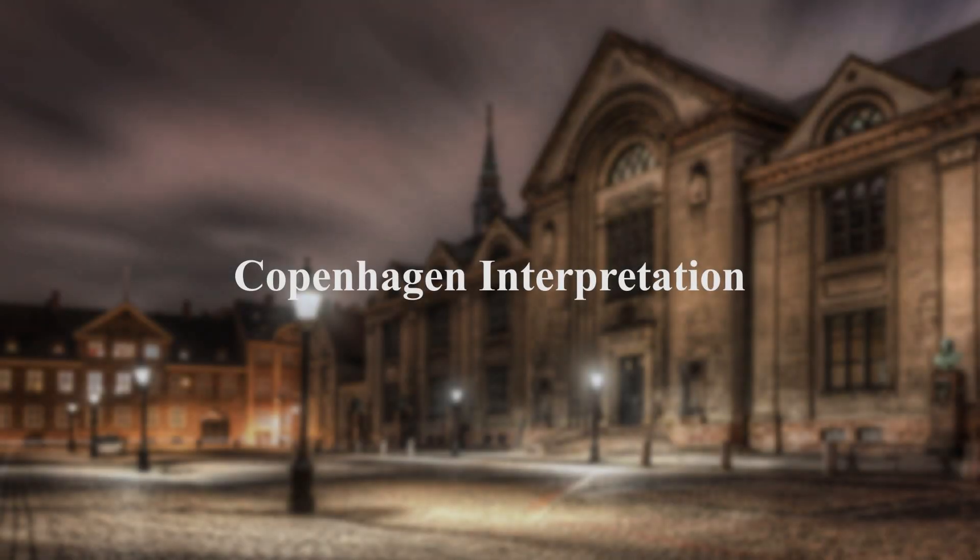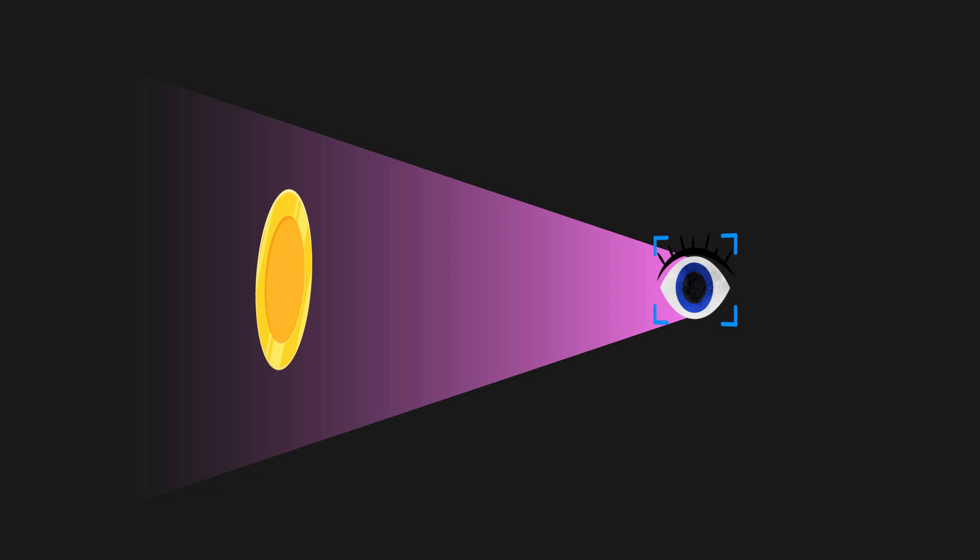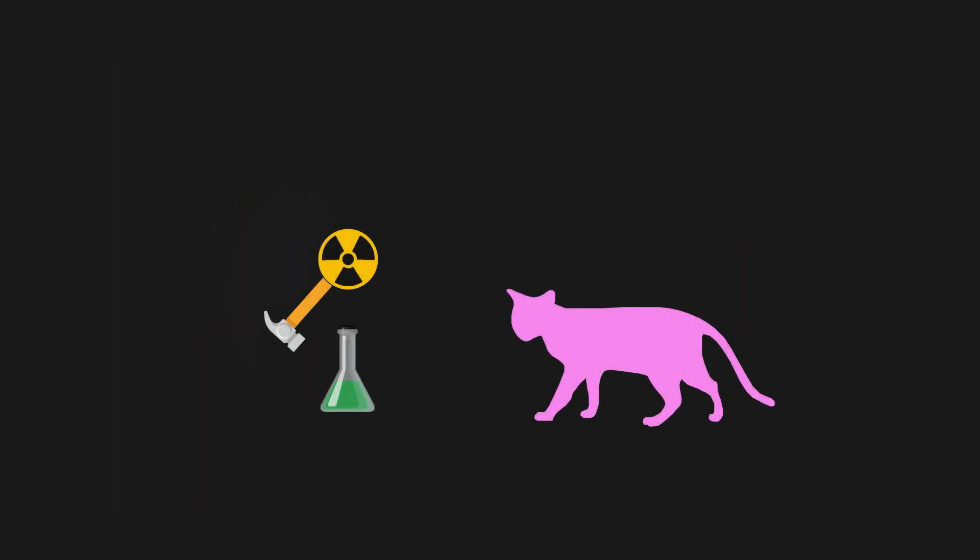The most commonly taught interpretation of quantum mechanics is called the Copenhagen interpretation. It proposes that our observation acts like a measurement which interacts with the quantum object, resulting in a definite state for the object. To give you an intuitive feel, let's look at the Copenhagen interpretation in terms of the famous Schrödinger's cat experiment.